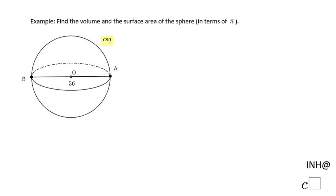Welcome or welcome back to INH at C-Square. In this example, we have to find the volume and surface area of this sphere. You notice what we know about this sphere is the length of this segment, which is the diameter of the sphere, the diameter of circle O if you want to call it that.